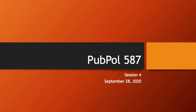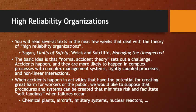Welcome. Today we're taking on a second major theory of organizational safety and the causes and prevention of major technology accidents and system accidents, and this is the theory of high-reliability organizations.